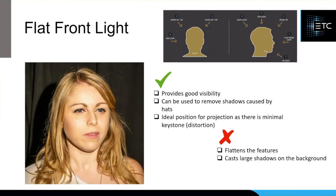Another problem with flat front light is that at high intensities, it's going to cast really big, strong shadows in the background that would be difficult to get rid of. So if you are going to use these, we tend to use them at quite low intensity — just enough to pick out any shadows we need to, not enough to cause background shadows we can't deal with. Of course, a big problem is it can also be uncomfortable for performers — having a light right into your eyes is never very pleasant.